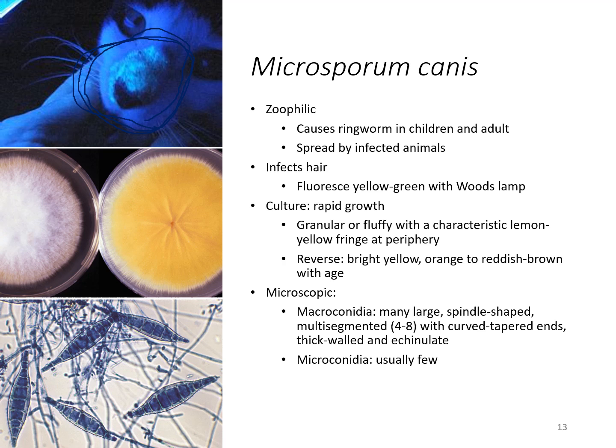With culture, it does grow rapidly and can be granular or fluffy in appearance. What's characteristic about it is you can see edges that have a lemon color to them, and when you flip the plate over you see this bright yellow lemon color on the reverse side as well.